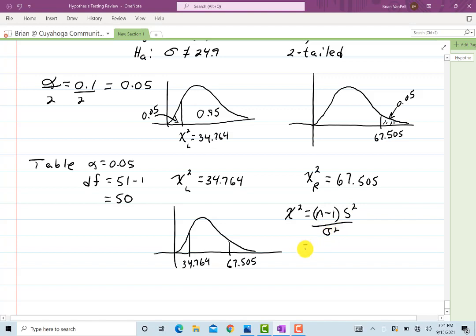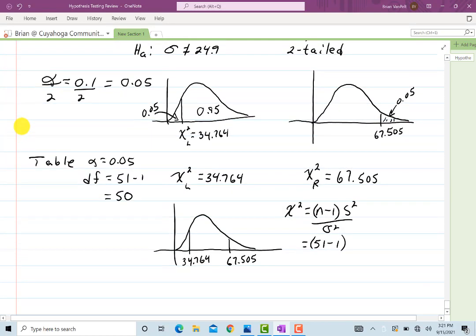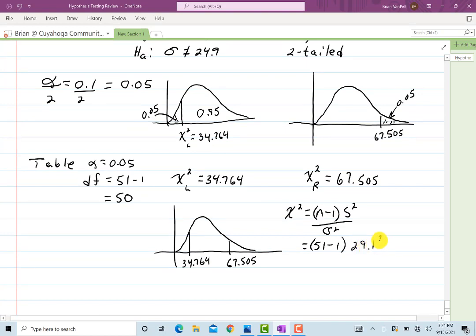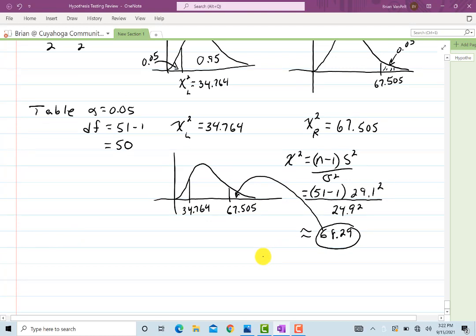Be careful because you were not given sigma squared. You were given sigma and s. s was 29.1. So you have to do 29.1, but you've got to square it. And then sigma was 24.9. Square it. And let's see what we get when all is said and done. To two decimal places, I get 68.29. And we can see, based on this, that it is in this region here. So since it's in a critical region, we reject h naught.